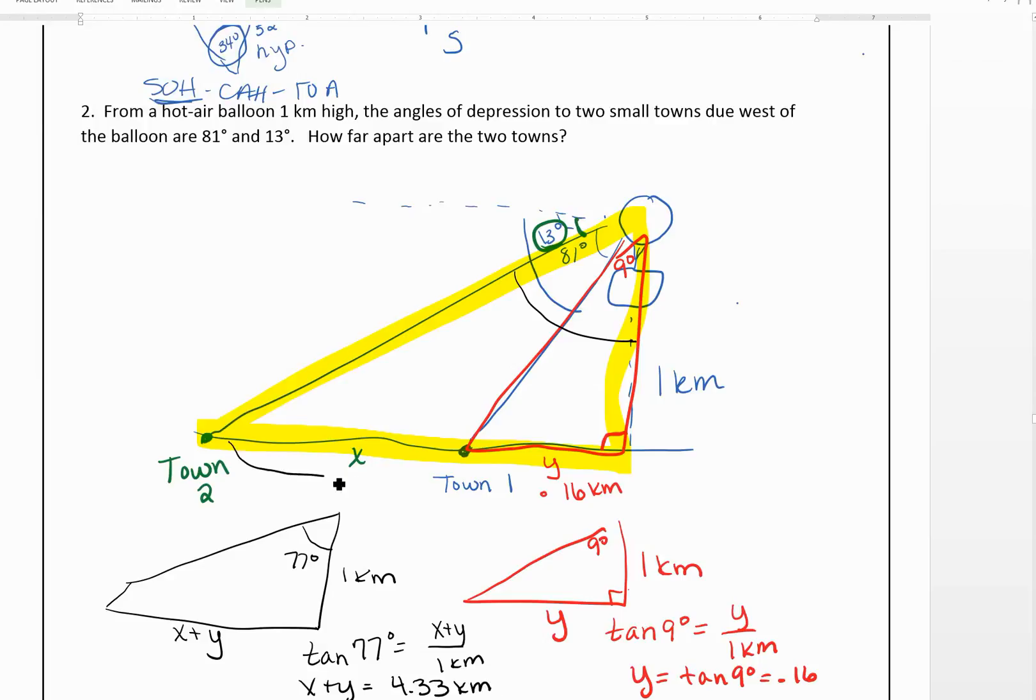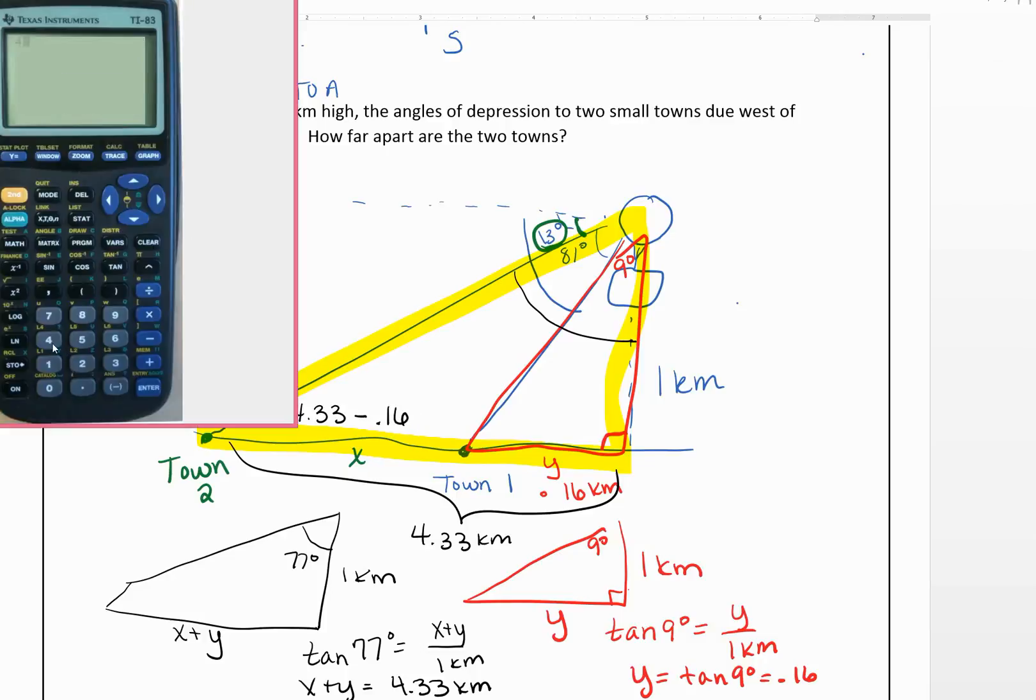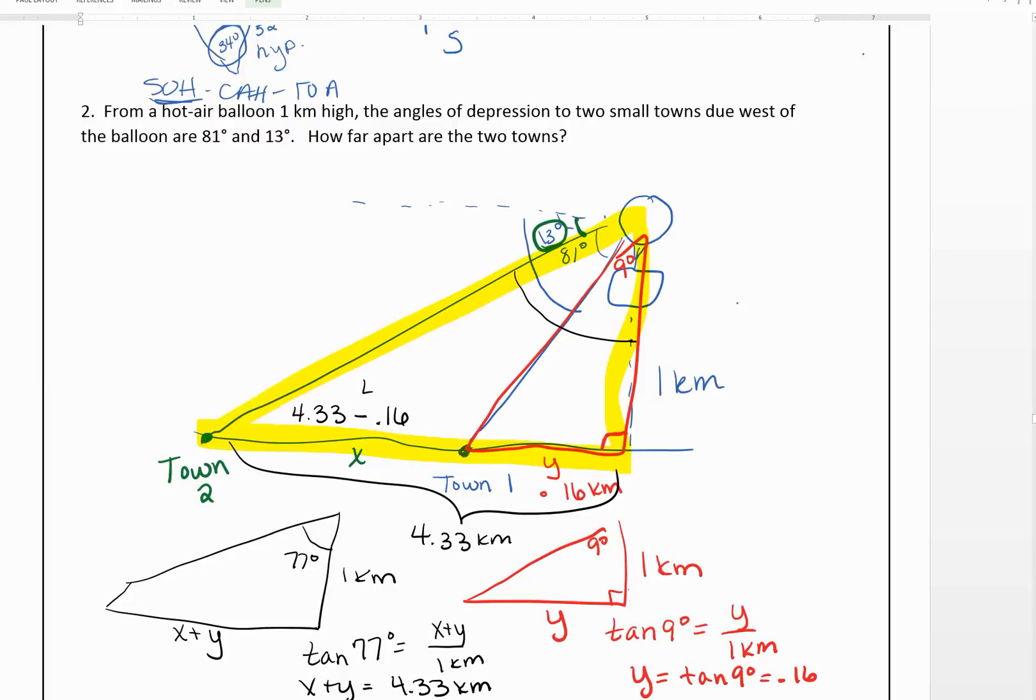So we know this whole thing is 4.33 kilometers. Now, we are trying to find the distance between them. So this X is going to be 4.33 minus the 0.16.